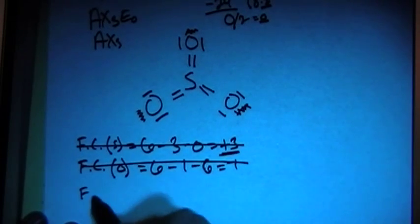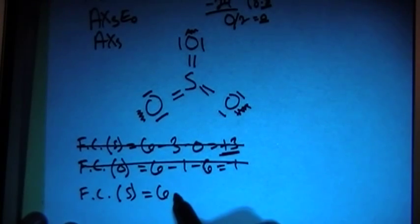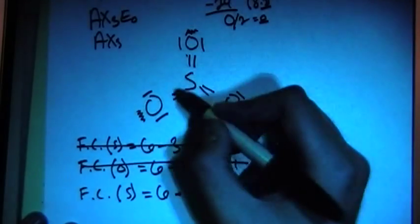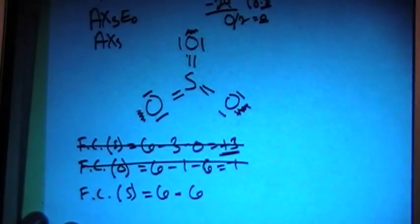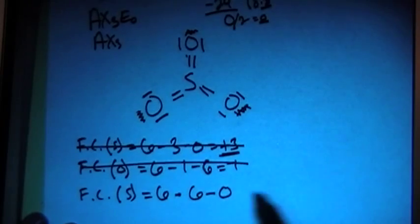Formal charge of the new sulfur is going to have 6 valence brought in, minus 6 bonds. Remember, double bonds count as 2 bonds, not just 1. And then minus 0 non-bonding electrons gives us a 0 formal charge, so that looks better.